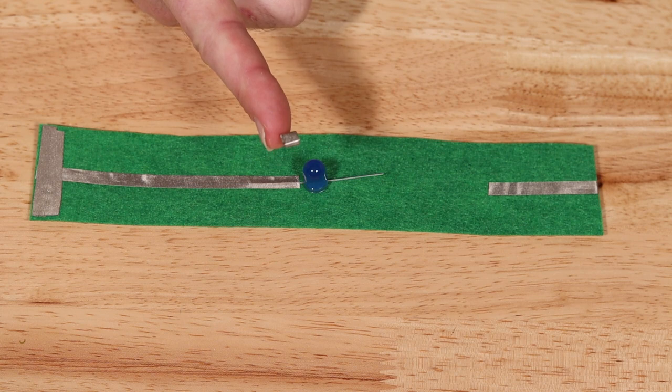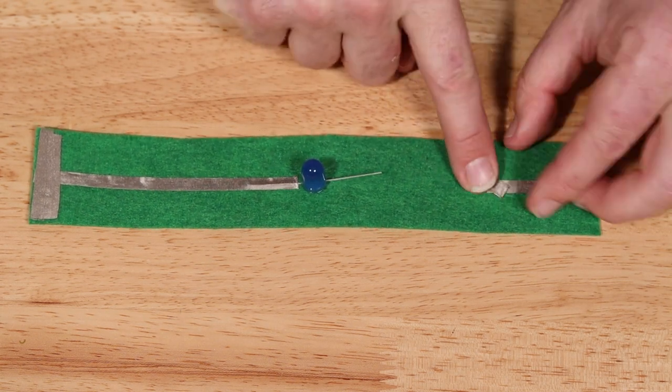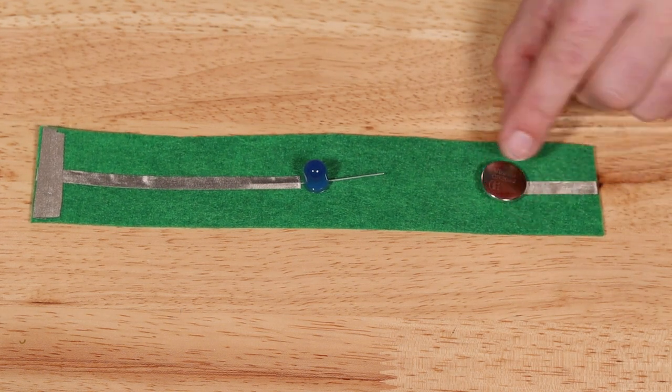Make a small loop of maker tape to stick down the battery. Stick down the battery, making sure it's positive side up.